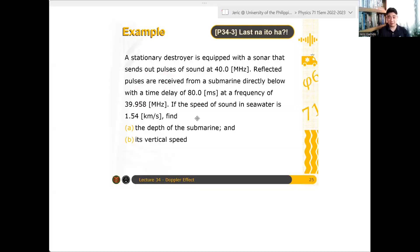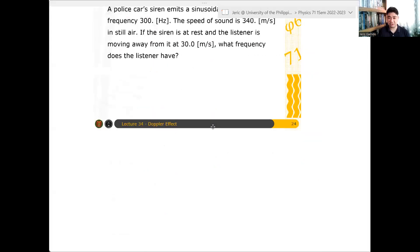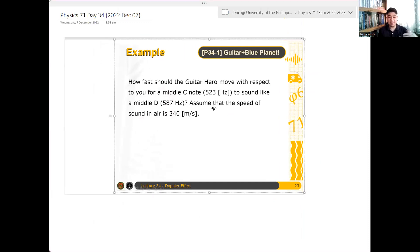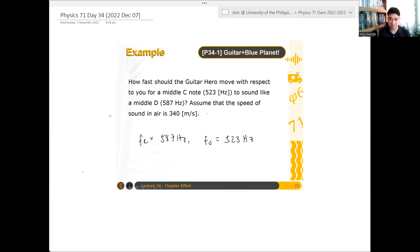So again, sorry for that. So let's have a guitar and blue planet here. So again, to sound like a middle D, it means that the frequency of your listener, which is you, the frequency of the listener should be 587 hertz. And the frequency of the source is 523 hertz.